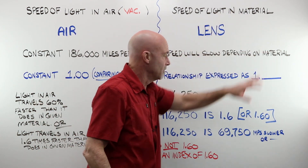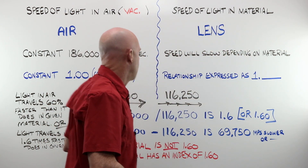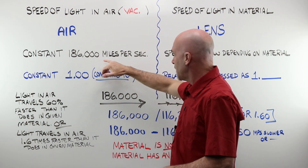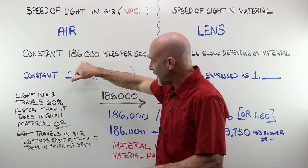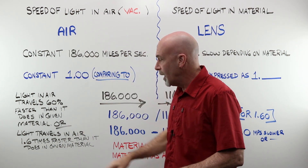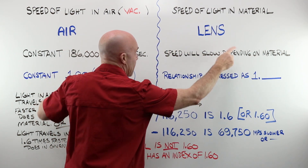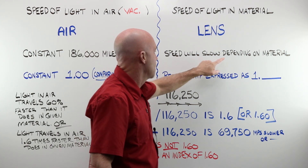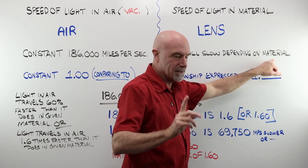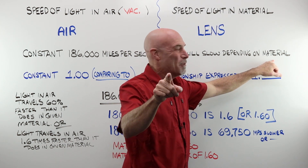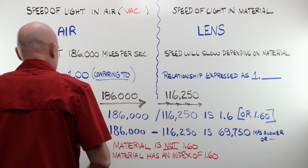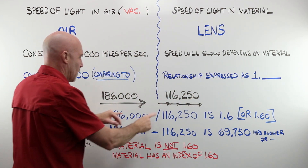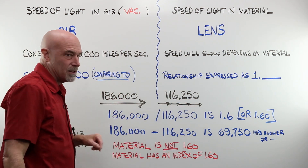How it compares to the speed of light in any given material or lens material. Light in air or in a vacuum has a constant speed of 186,000 miles per second. Because that is a constant, we can assign it the value of one. And then everything else — every other lens material — we're comparing it to that. The speed in a given material will slow depending on the material. The relationship becomes: how does this compare to this? Or as a ratio, how many times does this number go into this number?